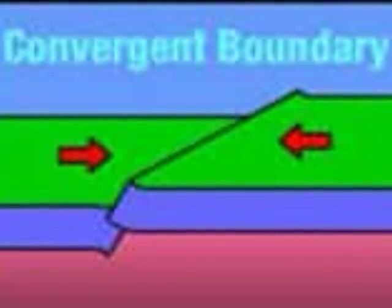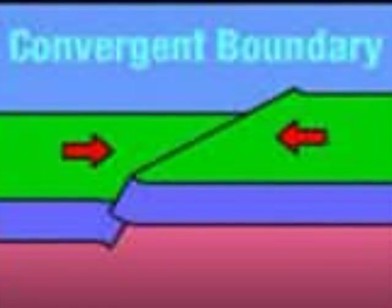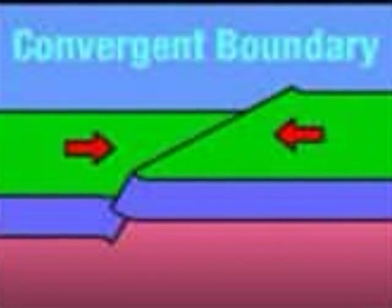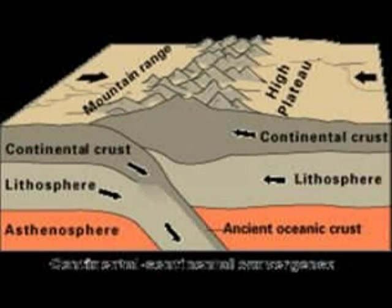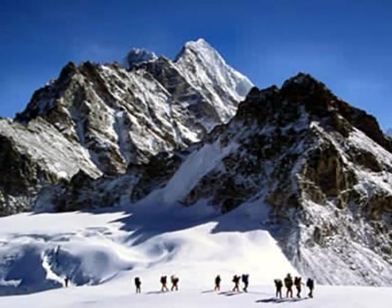There are three types of convergent boundaries: continental-continental, continental-oceanic, and oceanic-oceanic boundaries. After the denser crust sinks, the continental crusts crash into each other, rise up, and form mountain ranges. These kinds of mountain ranges are called folded mountains. An example is the Himalayas, which is a type of folded mountain.